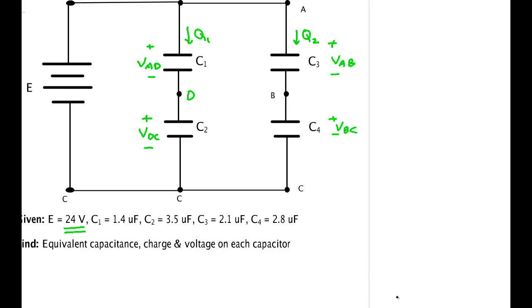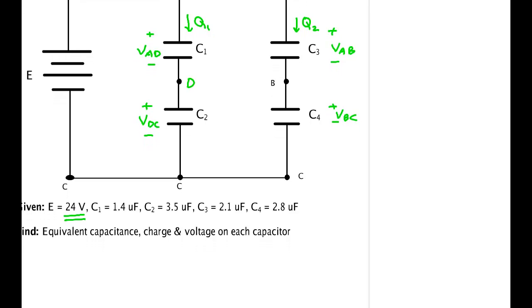To find the equivalent capacitance, charge, and voltage on each capacitor, we'll start by simplifying the circuit down to a single capacitor. C_12 equals C1 times C2 over C1 plus C2 - they're in series.